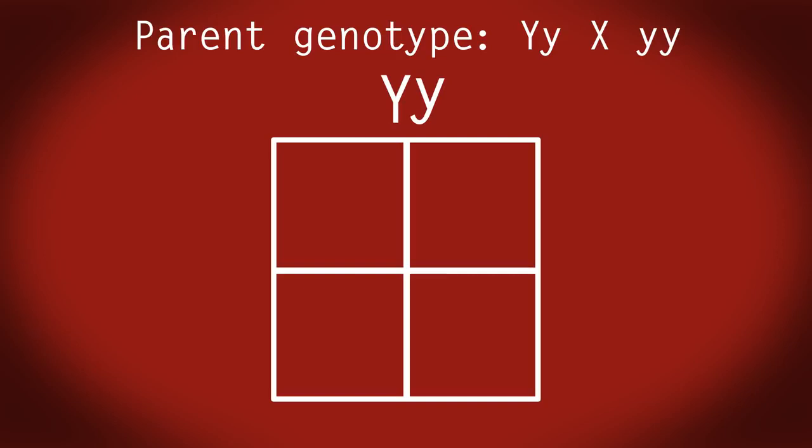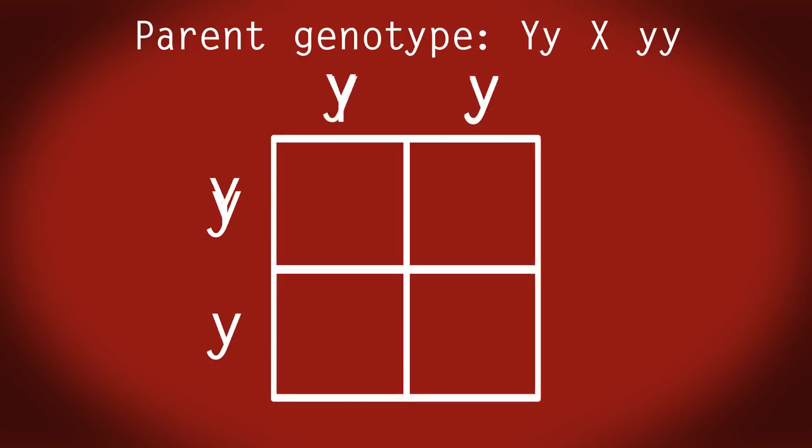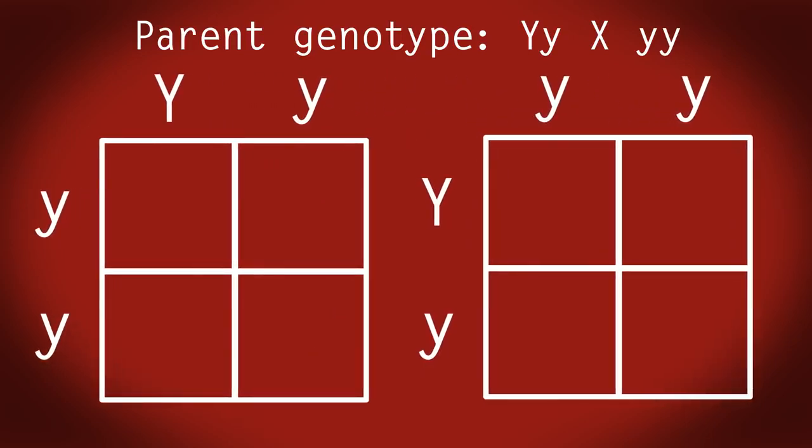We start with an empty grid like this. If we crossed a heterozygous Yy and a recessive yy parent together, we enter the first parent's genotype here. Split them and enter one Y in the first column and the other y in the second column. And the second parent here doing the same thing. One y in the top row and the second y in the bottom row. It doesn't matter which parent you put where, both are correct.